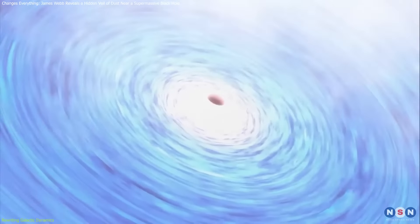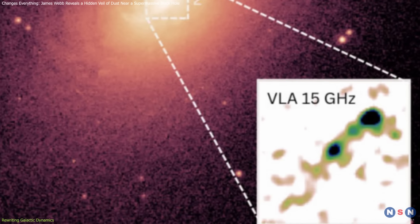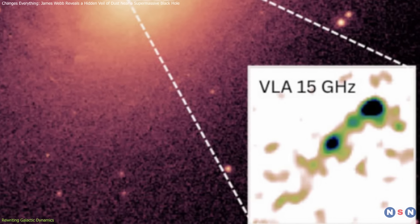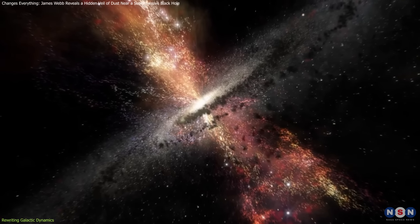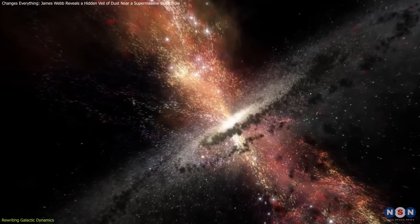than the unified model accounts for. The discovery of extended mid-infrared emissions from the polar dust, stretching up to 650 light-years from the AGN, underscores the vast scale of these interactions.